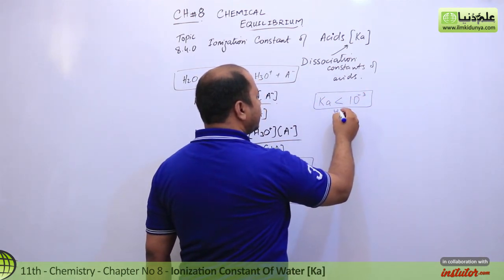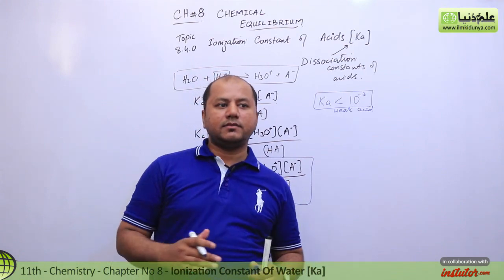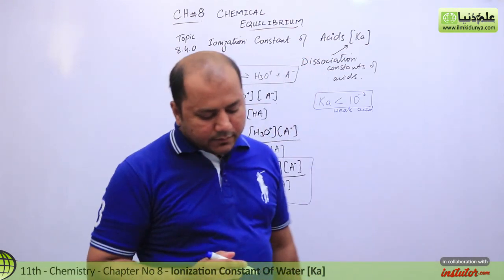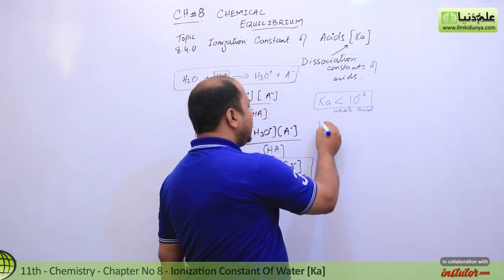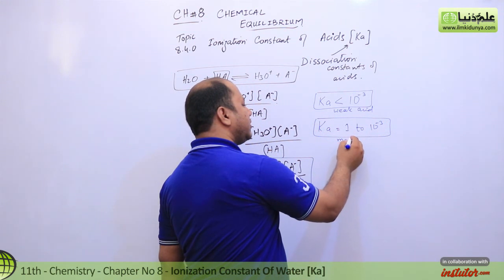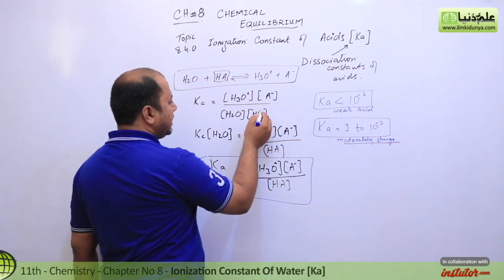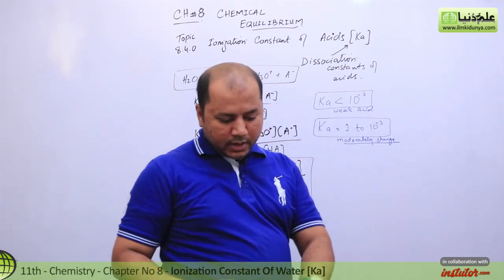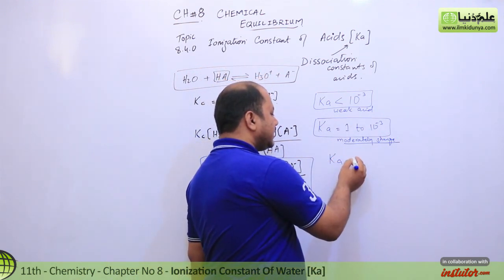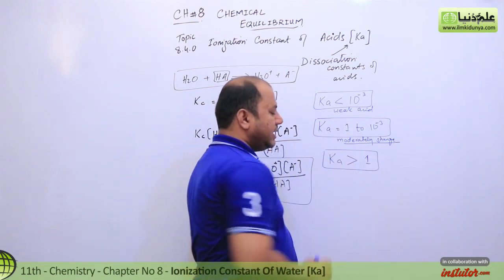You can remember that if Ka is around 10 to the power negative 3, that is a moderate acid. If the Ka value is less than 10 to the power negative 3, the acid is weak. If the Ka value is greater than 1, the acid is strong. So if Ka is greater than 1, it means the acid is strong.